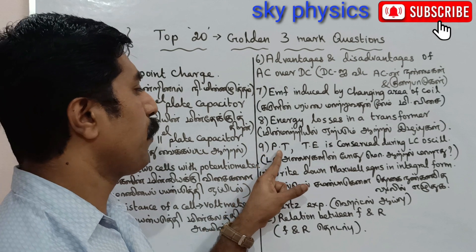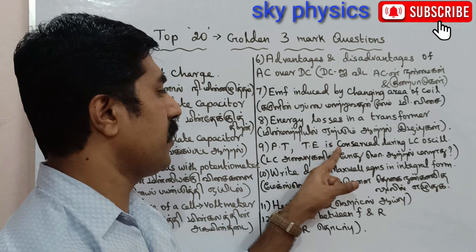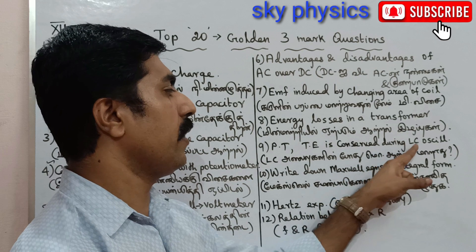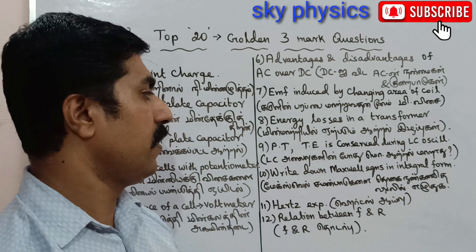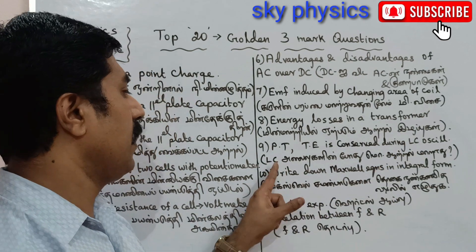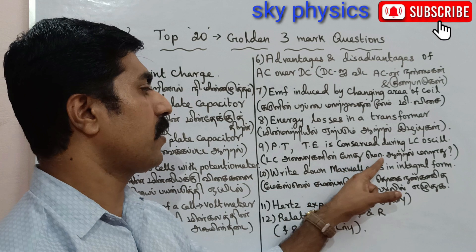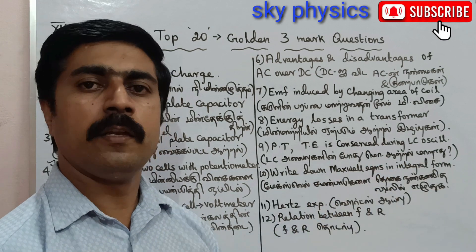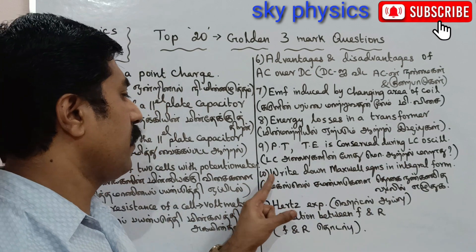9th question: Prove that total energy is conserved during LC oscillations. (Tamil: LC Alayvukal in poodhu Motta Artel Maradu — Nirubi, aladhu Nirubi.)